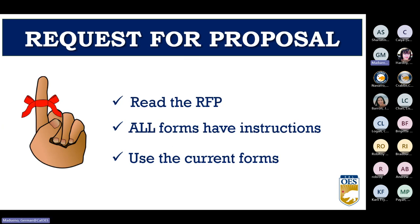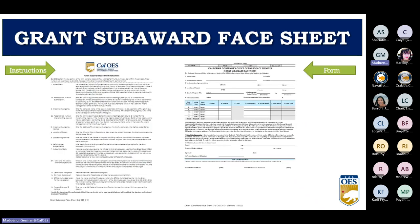Here are a few helpful reminders: first, read the entire Request for Proposal to understand what is required. Second, all forms have instructions — if you have a question about a form, look at the instructions first, and if you still have a question, email listosgrants@caloes.ca.gov. Third, use current forms — CalOES updates forms often, and using an outdated saved form may delay the processing of your award.